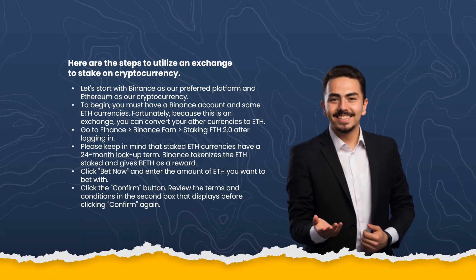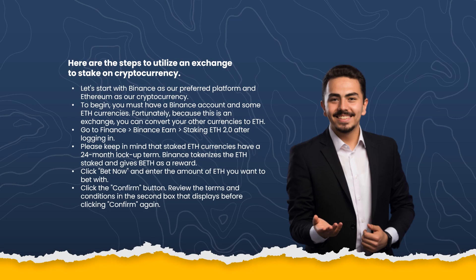Starting with Binance as the preferred platform and Ethereum as the cryptocurrency: first, you must have a Binance account and some ETH. You can convert your other currencies to ETH. Go to Binance Earn > Staking > ETH 2.0 after logging in. Note that staked ETH currencies have a 24-month lock-up term. Binance tokenizes the ETH stake and gives BETH as a reward. Click 'Stake Now', enter the amount of ETH you want to stake, click confirm, and review the terms and conditions before clicking confirm again.